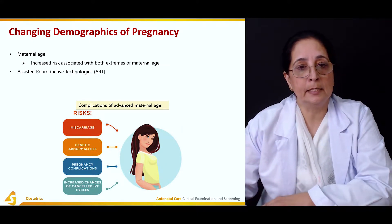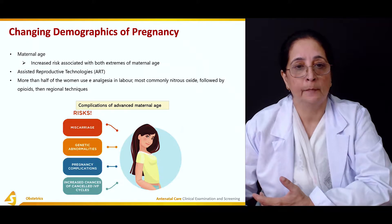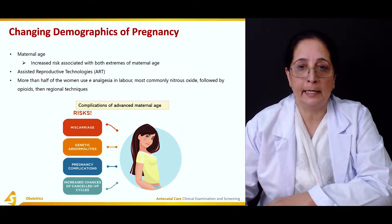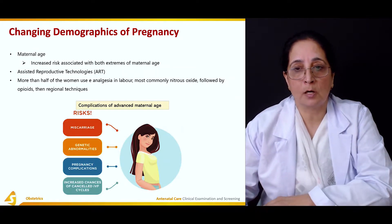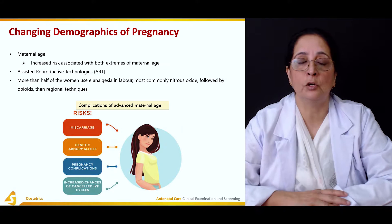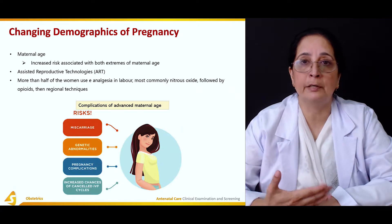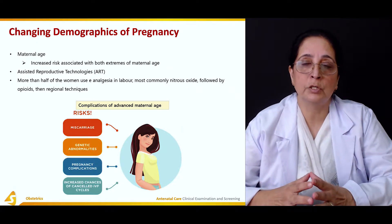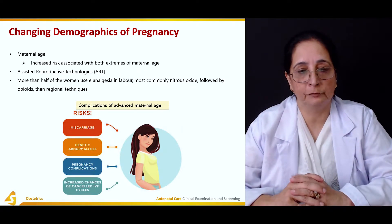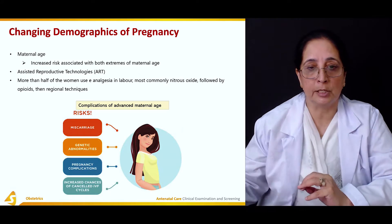Assisted reproductive technologies are also affected by maternal age. More than half of women use analgesia in labor, most commonly nitrous oxide followed by opioids and then regional techniques. Assisted reproductive technologies include in vitro fertilization and different techniques, and the anesthesia preferred is nitrous oxide followed by opioids.